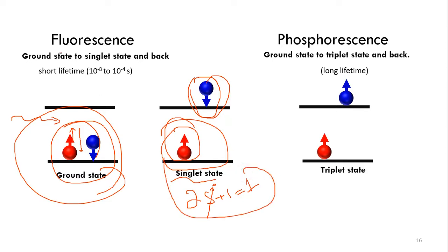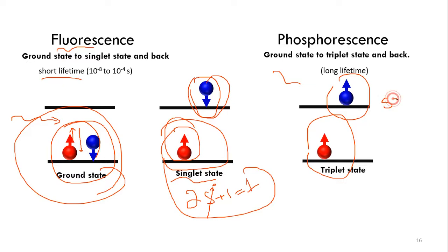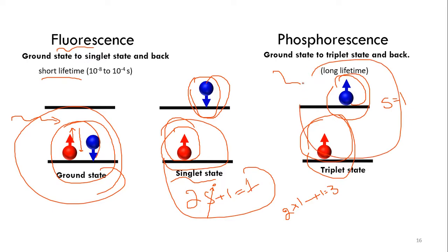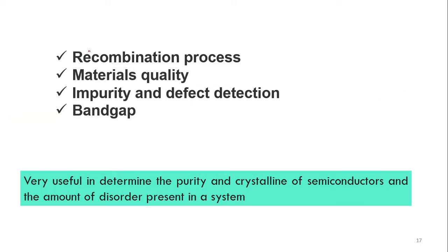Fluorescence occurs in the singlet state and has a very short lifetime. If we excite the electron in a way that there is a flip in spin — this phenomenon is called inter-system crossing — we flip the spin and the net spin becomes one. Using the multiplicity formula: 2(1) + 1 = 3, so the multiplicity is three. This is called the triplet state, and phosphorescence basically occurs here, while fluorescence occurs in the singlet state.